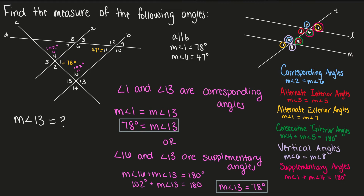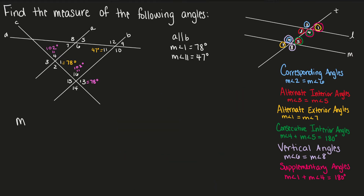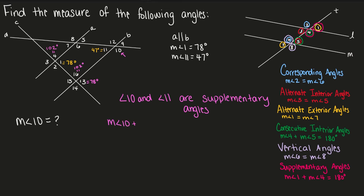Next, let's find the measure of angle 10. Angle 10 and angle 11 are supplementary angles. So angle 10 plus angle 11 equals 180 degrees. Angle 10 is going to equal 180 degrees minus the value of angle 11 — or minus 47 — and angle 10 will equal 133 degrees.